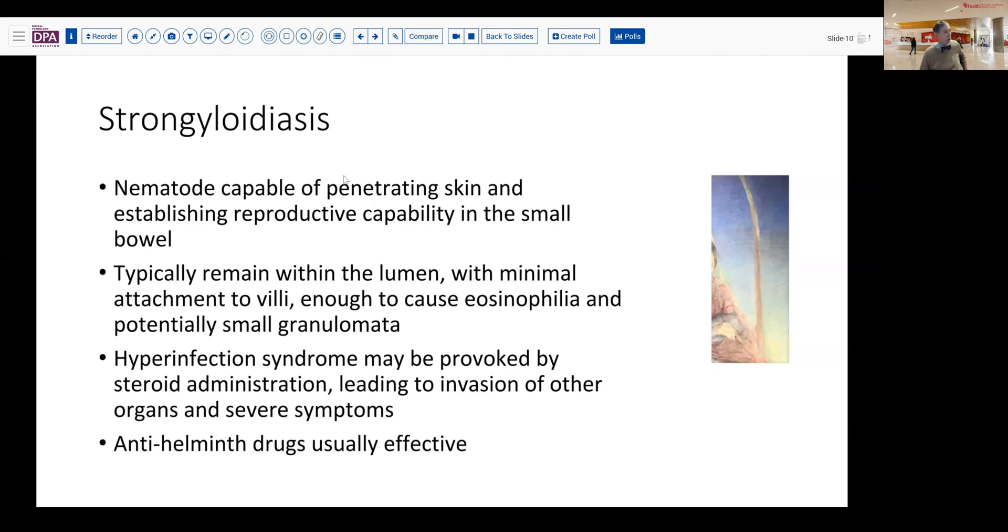When this infection becomes established, it can certainly lead to diarrhea and weight loss, malabsorptive symptoms. Strongyloides is a nematode. And unlike many parasites, it is actually capable of penetrating the skin and then establishing its own reproductive capability within the small bowel. It does reproduce sexually. And so it does require some sort of a population, if you will, of larvae to reach that location. Now, typically, these organisms remain within the lumen. Although getting there, they can transfer through various tissues. We've mentioned the skin, the bloodstream, the lungs, and so forth. We'll talk about the life cycle a little bit later on. When they're established in the GI tract, there's usually relatively little attachment to the villi, but they do sort of burrow into the crypts and can cause this eosinophilia and potentially even small granulomata.